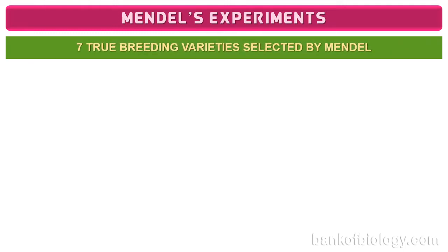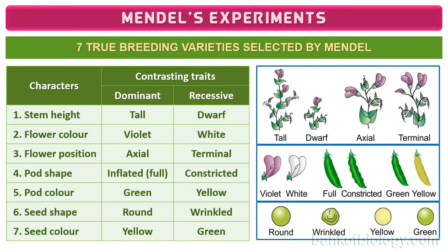In this manner, for conducting hybridization experiments, Mendel selected seven pairs of true breeding pea varieties. See the table given on the screen — it shows seven characters selected by Mendel. Each character has two contrasting traits, that is dominant and recessive traits. We have already learned about these terms in the first episode. Let us read the seven characters and their traits.